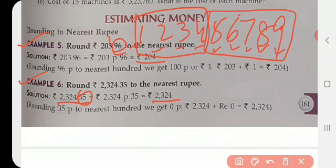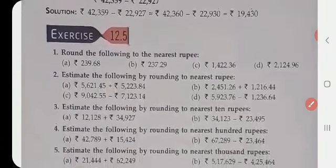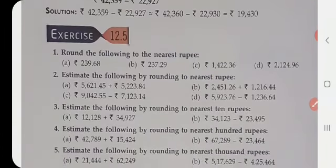Now in this sum we have to round it off to nearest rupee. ₹239.68 to the nearest rupee. Now 68 paisa, as you know, is nearing to 100 paisa.